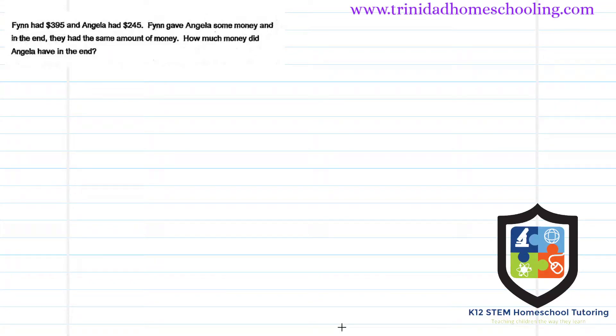Hi and welcome to another solution video. In this question, we have Finn and Angela having each different sums of money. Finn gave Angela some money, and in the end they had the same amount of money. The question asks to find how much money did Angela have in the end.